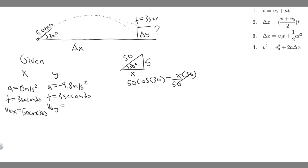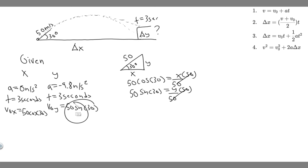For the y component, use sine: sine of 30 equals y over 50, so y equals 50 times sine of 30. The y initial velocity is 50 times sine of 30. To summarize: the x component is your magnitude times cosine of the angle, and the y component is your magnitude times sine of the angle.